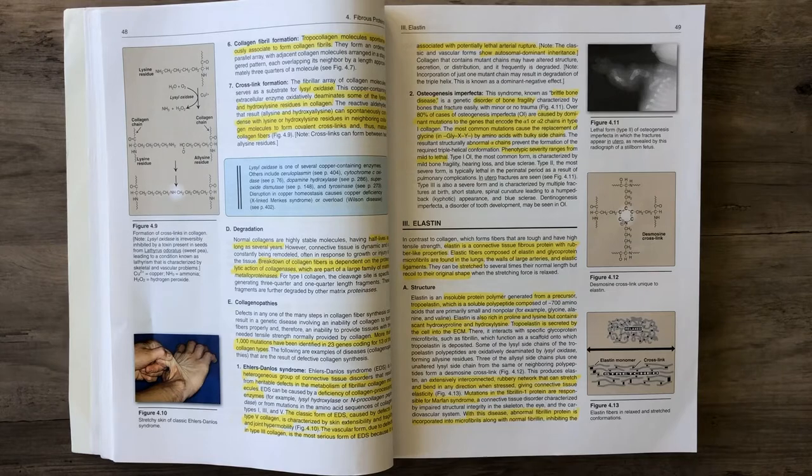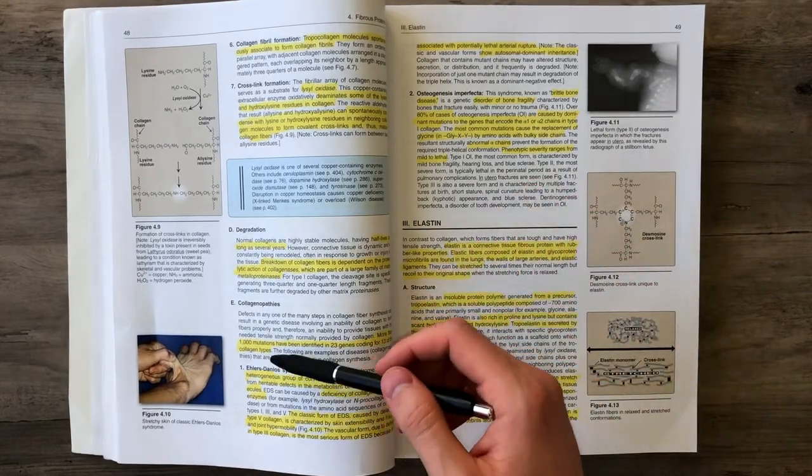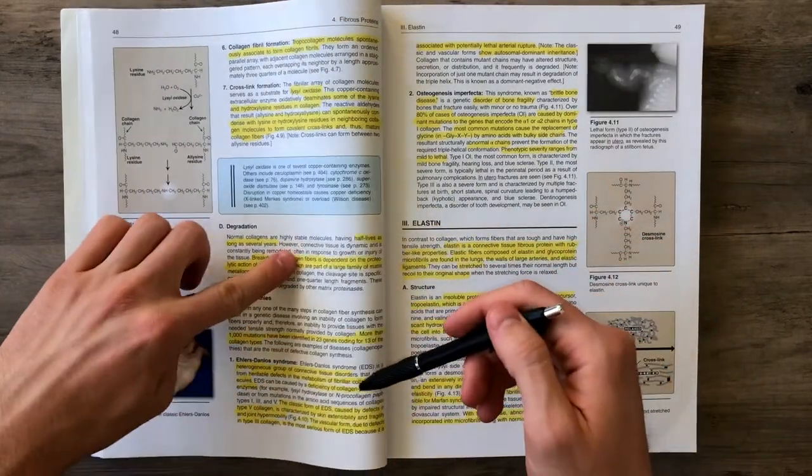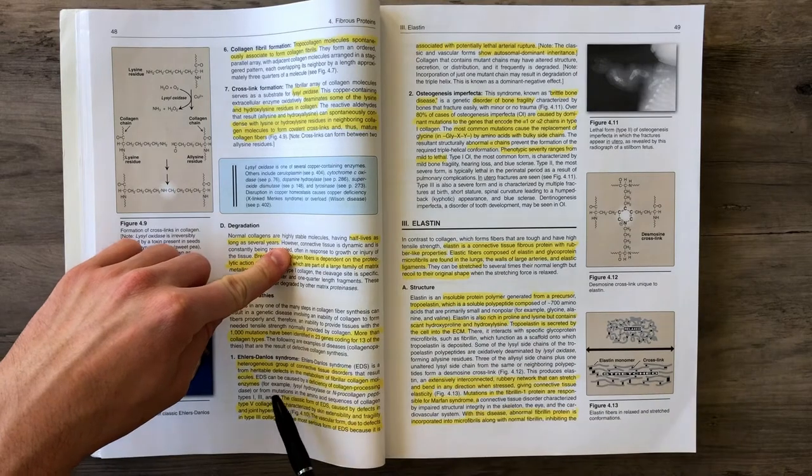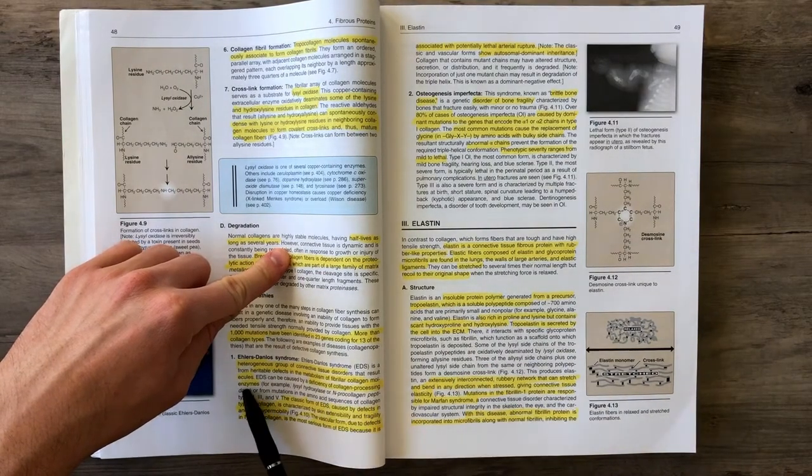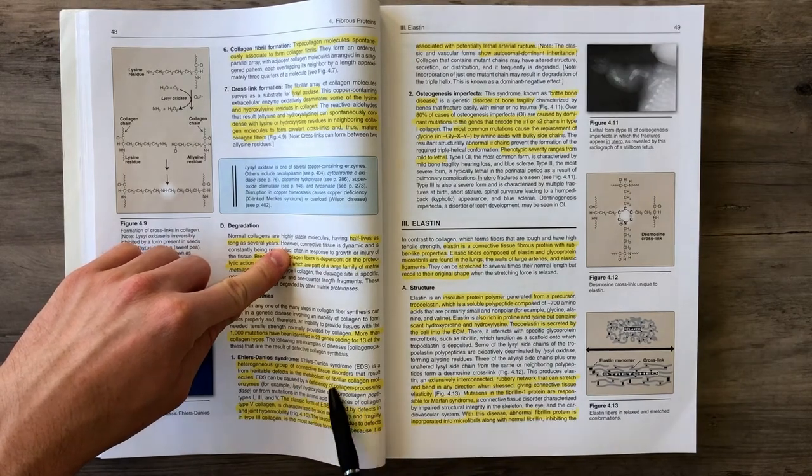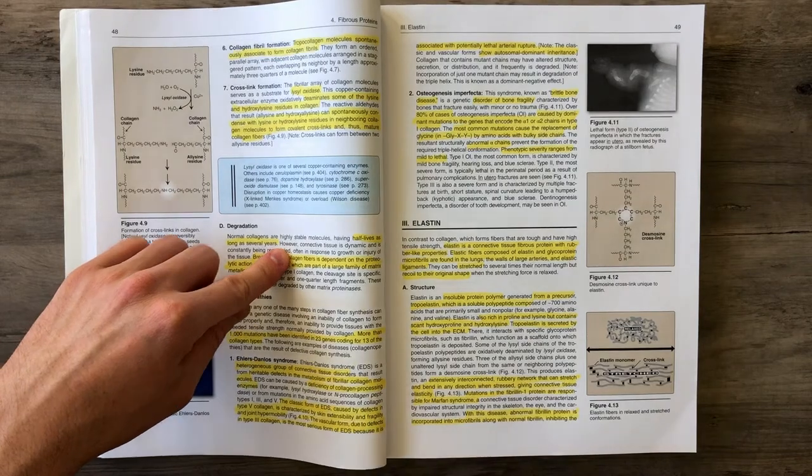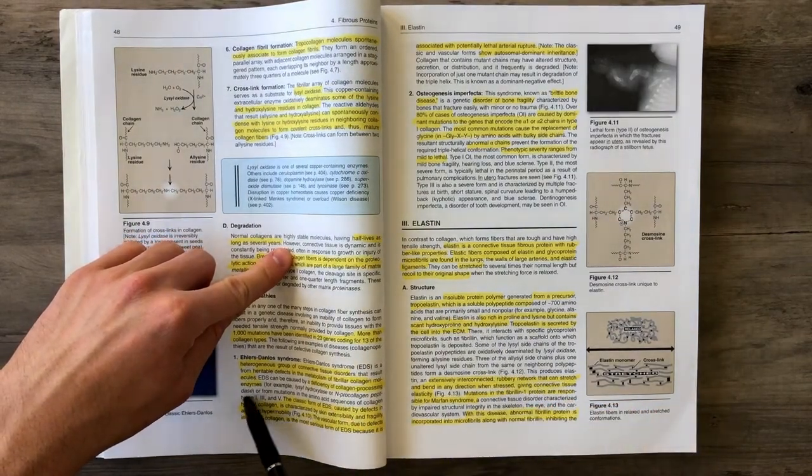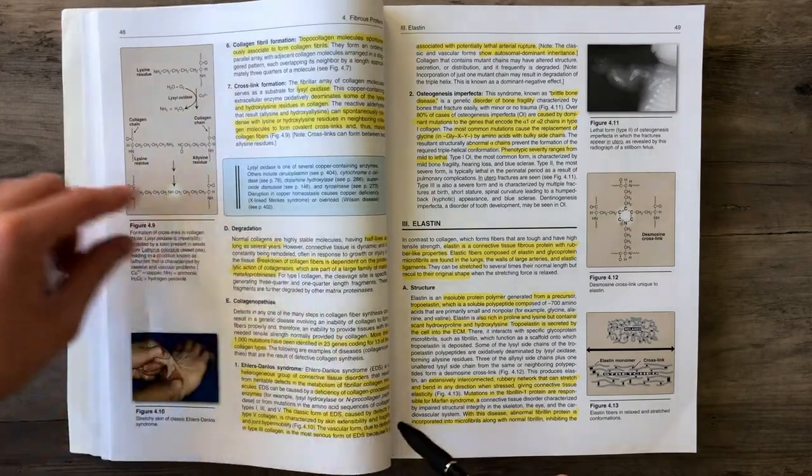When it comes to issues in collagen, we have two main diseases. Ehlers-Danlos Syndrome is an umbrella term for connective tissue disorders that are heritable and rarely result from deficiency of collagen-processing enzymes, such as lysyl hydroxylase or N-pro collagen peptidases. These result in defective formation of collagen.